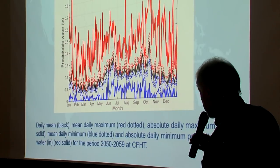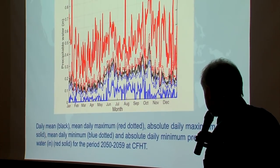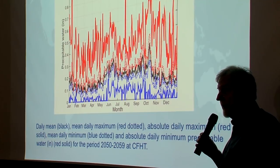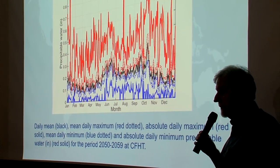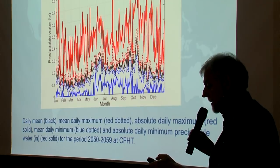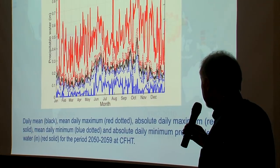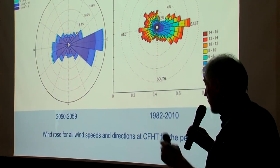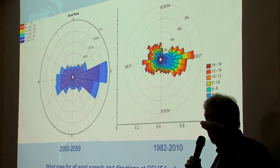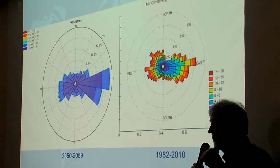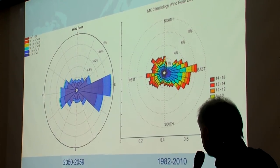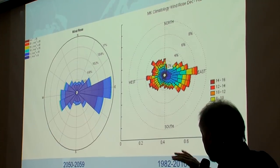The basic message is that wintertime precipitable water will be about the same, but summertime will be higher than the current climate. The question remains whether it will also be higher at night or mostly just during the daytime.